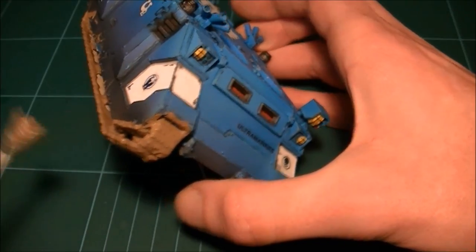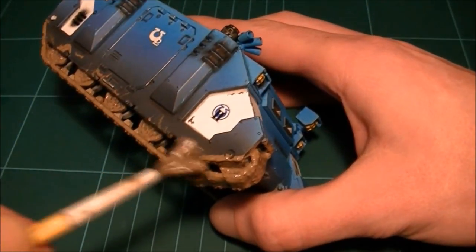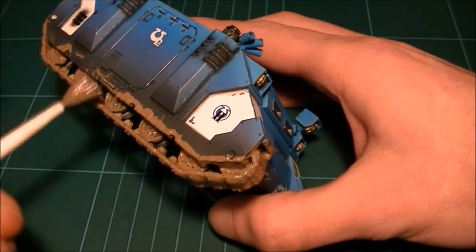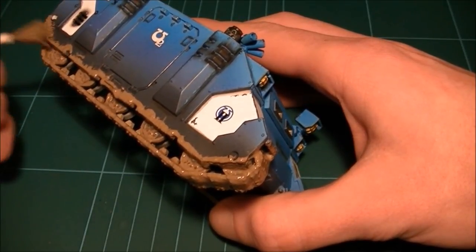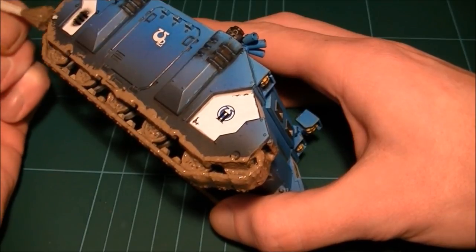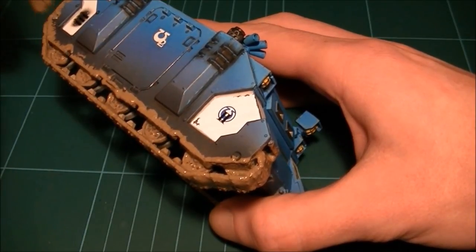I'm going to apply some mud effect here just to the lower parts of the tank anywhere you might get splashes. I'm going to try and keep the brush going in a downward motion, this will just help us get the effect we're going for.